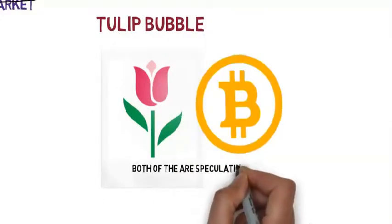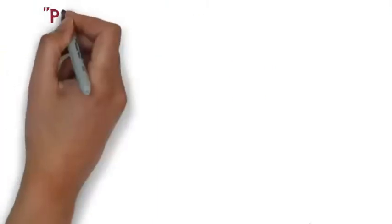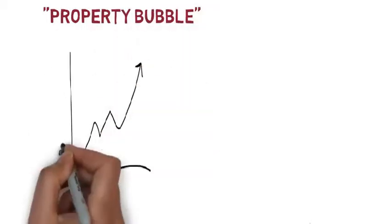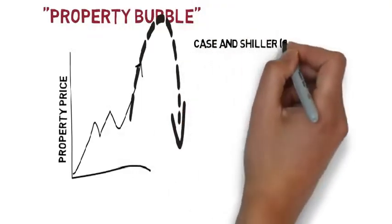Does the Tulip bubble ever ring a bell to you? How about Bitcoin? What do they have in common is both of them are speculative bubbles. The term property bubble means continuous increase of property price in the future, ignoring the risk of property prices to fall at any time.